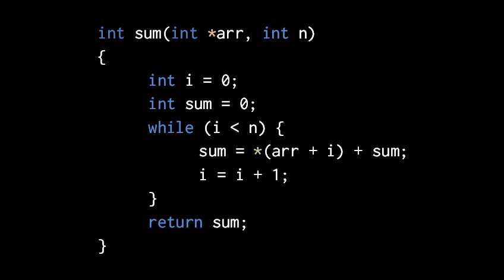In the second iteration we effectively add the second int to sum, and then in the third iteration we add the third int to sum, and so forth, until eventually we run out of ints to add. We exit the loop and return sum.